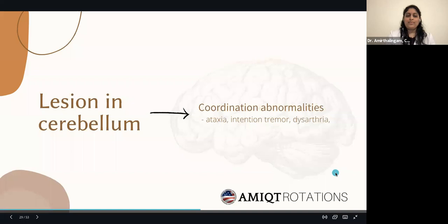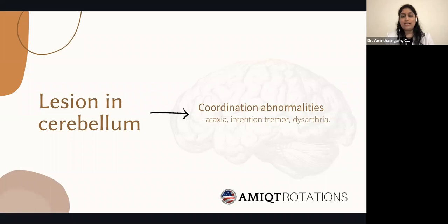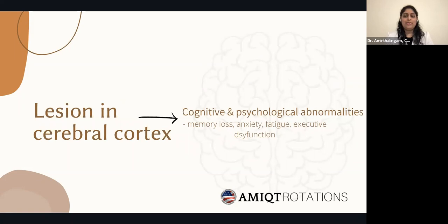A lesion in the cerebellum may present with coordination abnormalities — ataxia, intention tremor, and dysarthria — which can be confused with other neurological conditions. For lesions in the cerebral cortex, cognitive and psychological abnormalities are possible, including memory loss, anxiety, fatigue, and emotional instability, which can be misinterpreted as psychological conditions.